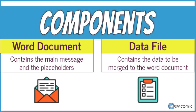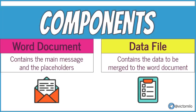There are two components in order to achieve the goal of mail merge. The first component is called the Word document. It basically contains the main message and the placeholders. Placeholders are the data fields that will be created in the data file, and those data fields will represent the actual stored data.